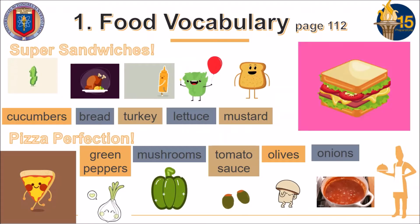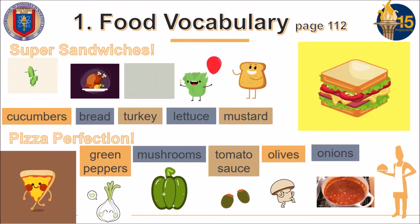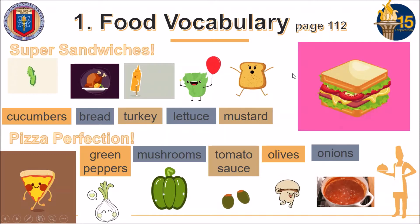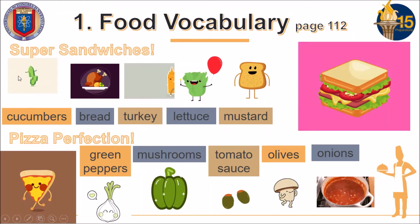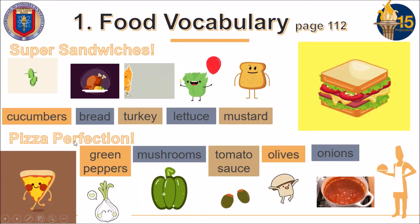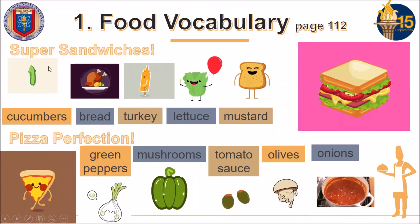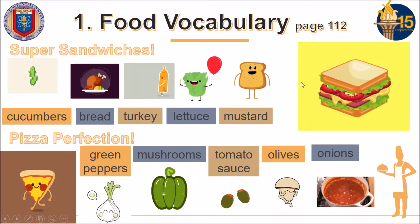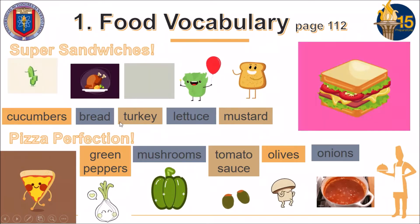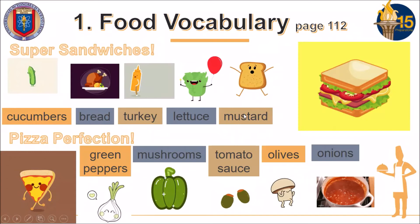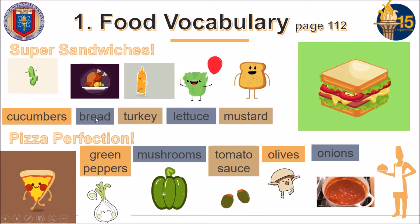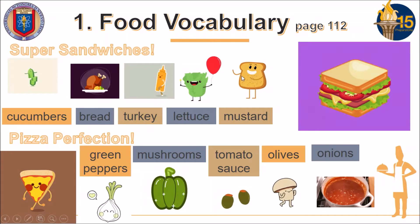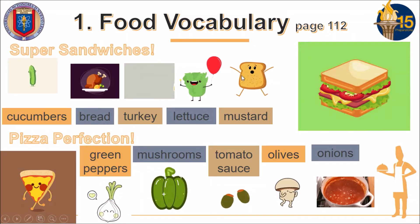In this first point, we are going to see vocabulary about food. You can follow the activity on page 112. The vocabulary is divided into two different sections: super sandwiches and pizza perfection. In super sandwiches, we are going to see the food that is used to create a sandwich. What you need to do is match the vocabulary with the images using a line.